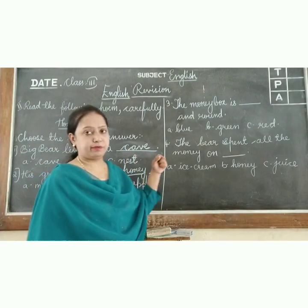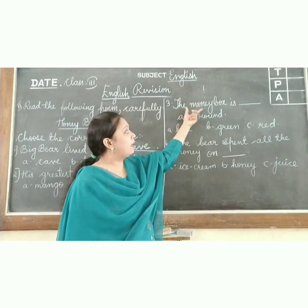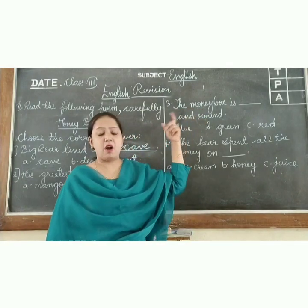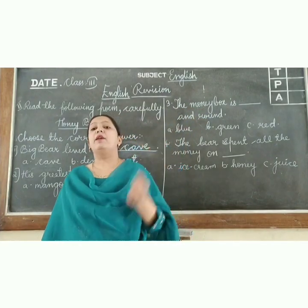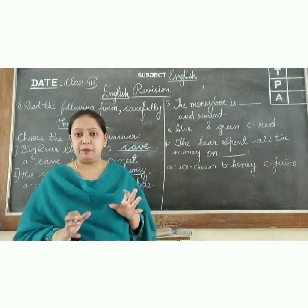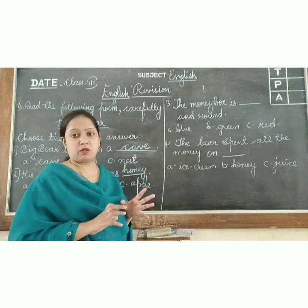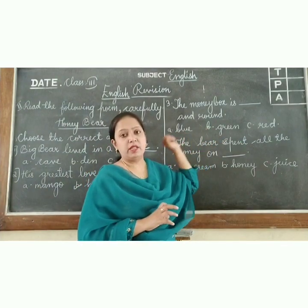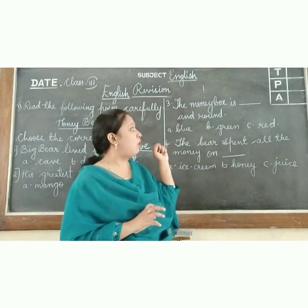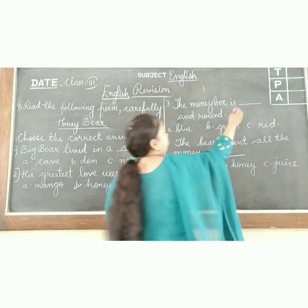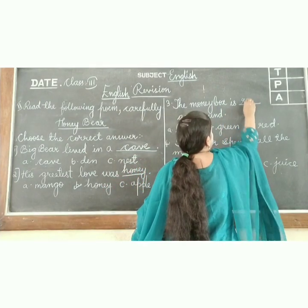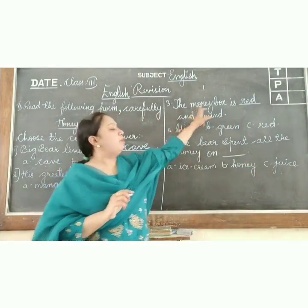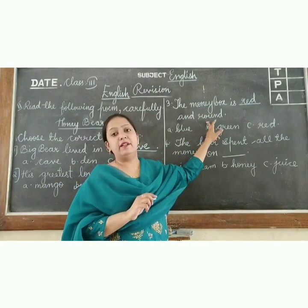Third one: The money box is dash and round. The poet gave the bear a money box — what is the color of that box? Options are blue, green, or red. The color of the money box is red. The money box is red and round.